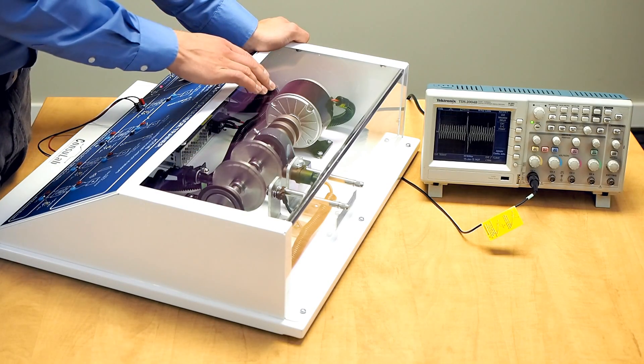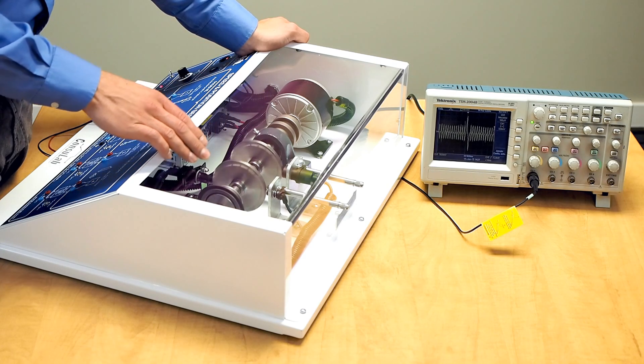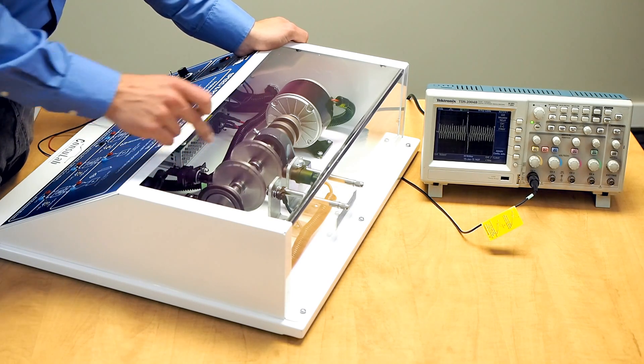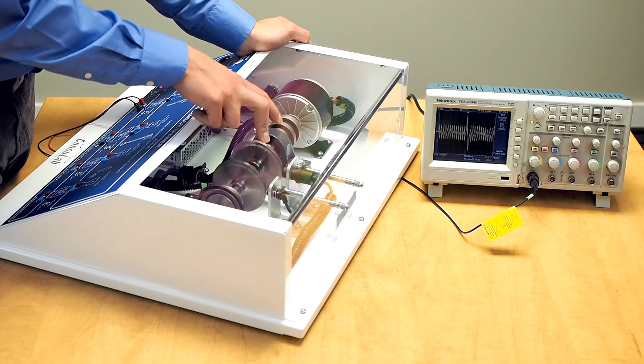Here we can see the electric motor that drives the shaft with the different tone wheels on. You can also see the four different sensors, two of which have gap adjustment.